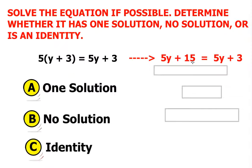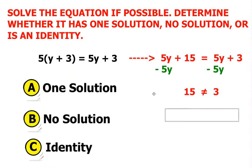Notice you have variables on both sides of your equation. What will we have to do in order to get the variables all on one side? We're going to have to subtract 5y on both sides of your equation. The result of that is 15 is equal to 3, but we know it's not.